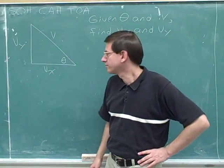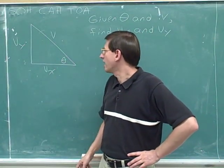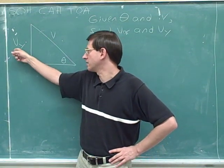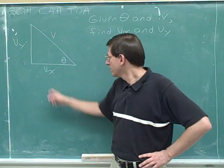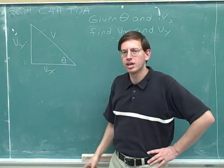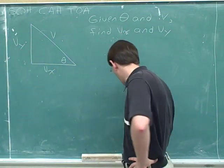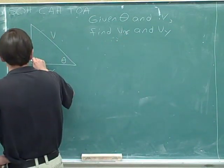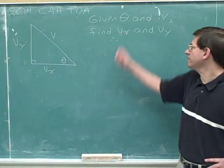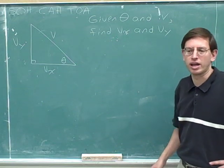Here's another right triangle. I've labeled one of the angles as theta, one side as v, another side as v sub x, and another side as v sub y. This is an x subscript and a y subscript, so these would be pronounced v sub x and v sub y. As usual, this is a right triangle. The problem is: if you're given theta and v, find v sub x and v sub y.